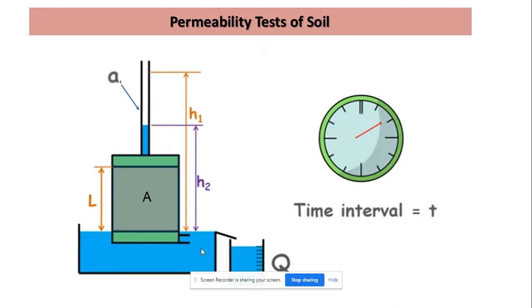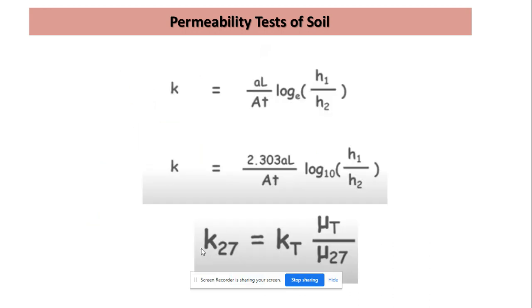We can get the value of permeability as k equals aL by At log base e of h1 by h2. If you want to convert this equation into log base 10, we multiply it by 2.303, and now it has been converted into log base 10 equation.